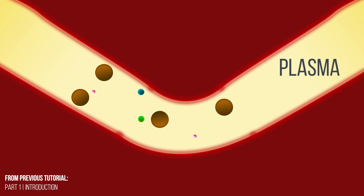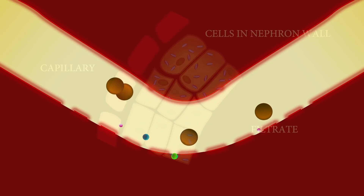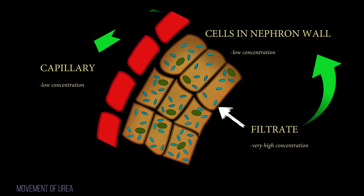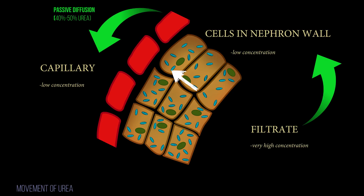Urea is a small molecule which passes easily through cell membranes. Its concentration in the filtrate is considerably higher than in the capillaries, so it diffuses passively through the wall of the proximal convoluted tubule and into the blood. Surprisingly, about 40 to 50 percent of the urea from the filtrate is reabsorbed by diffusion into the blood capillaries.